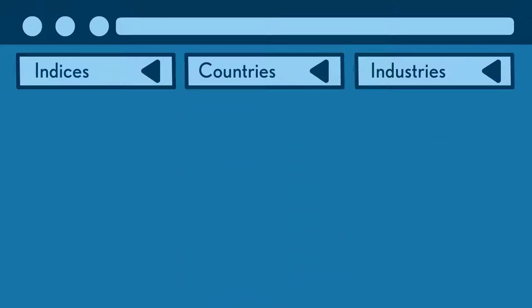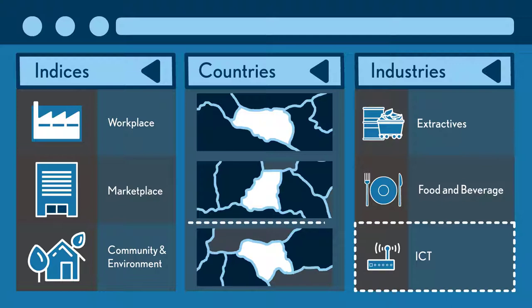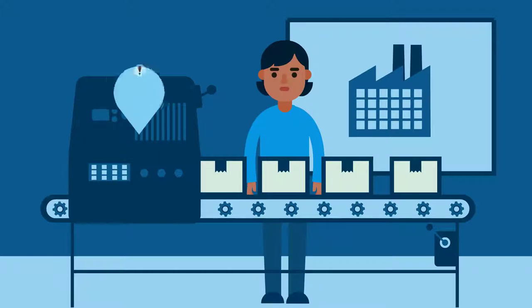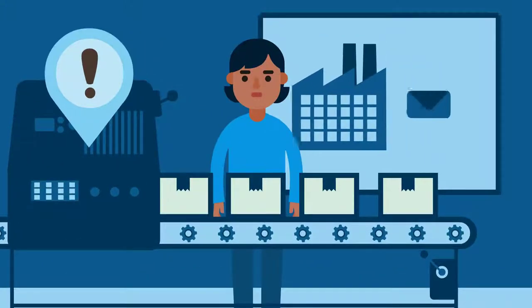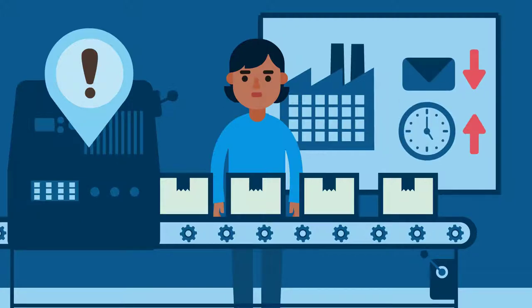Take the technology industry, for example. Say you're with an ICT company that sources its products in another country. You decide to examine your children's rights issues in the workplace. In the Industries section, you see that decent working conditions are high risk in the ICT industry.